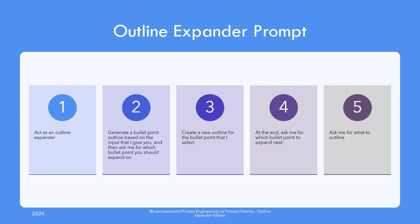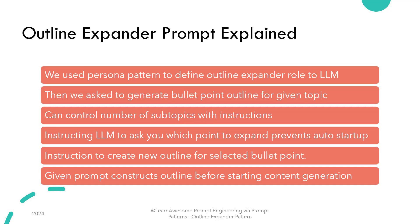To use this pattern, you need a prompt like the one below — and note how multiple prompt patterns are used here. 'Act as an outline expander. Generate a bullet point outline based on the input that I give you, and then ask me which bullet point you should expand on. Create a new outline for the bullet point that I select.' We used the persona pattern to tell ChatGPT it is an outline expander, which configures it to work with outlines. Then we ask it to generate a bullet point outline based on your topic — say, our solar system — and it should come up with eight or nine numbered bullet points.